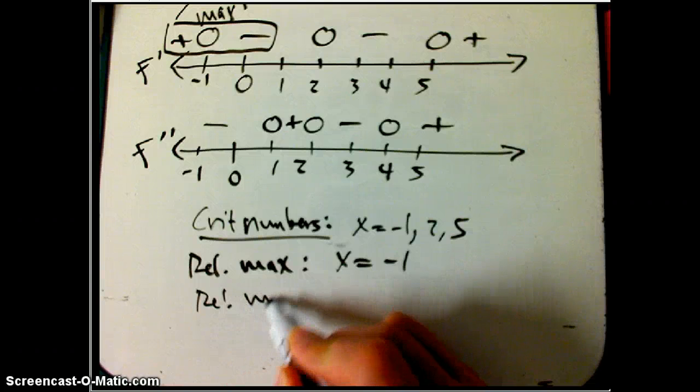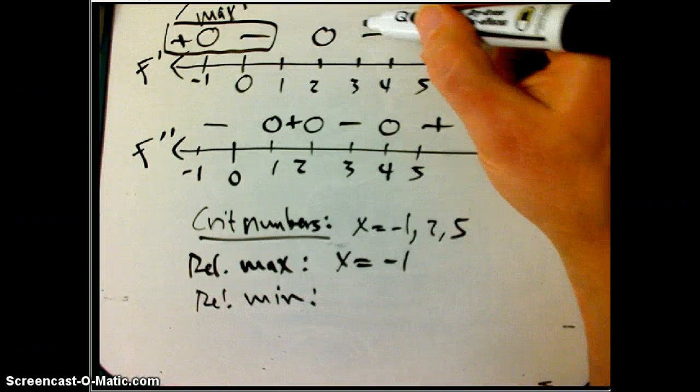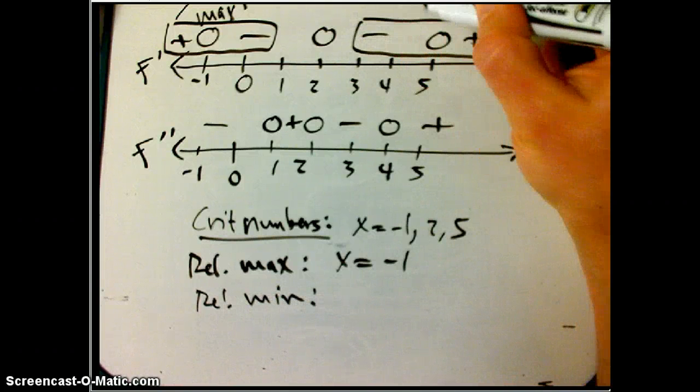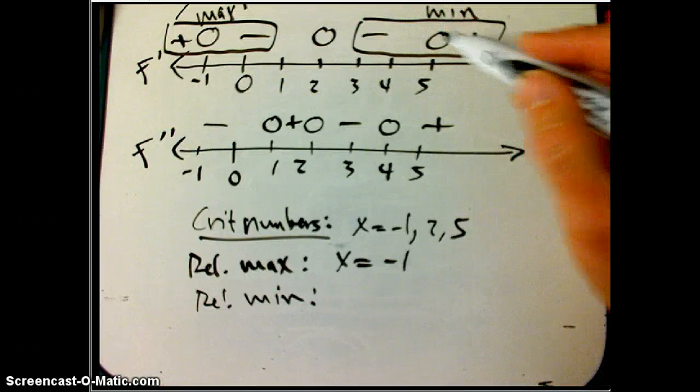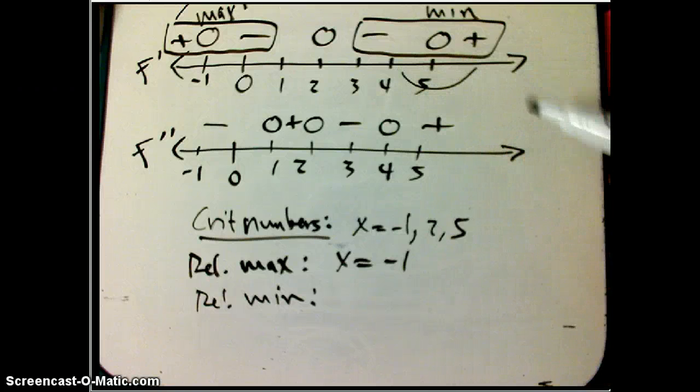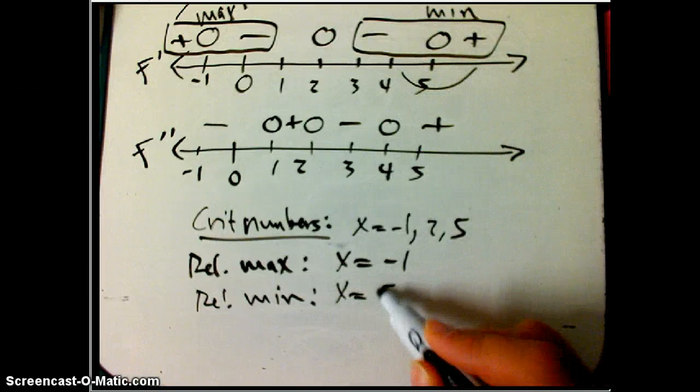Relative min, we look for down, flat, up. The graph is going to look like a bowl here. And that's going to be x equals five.